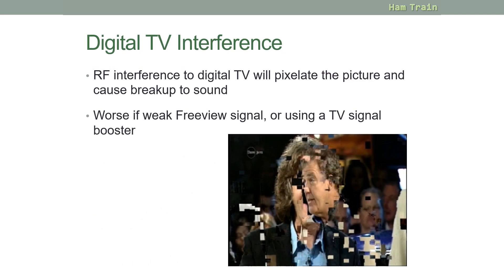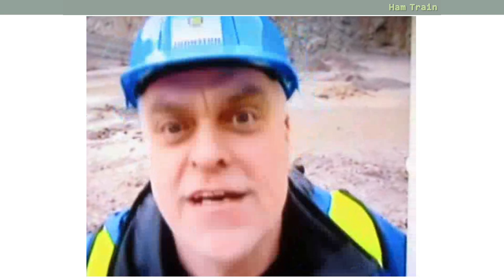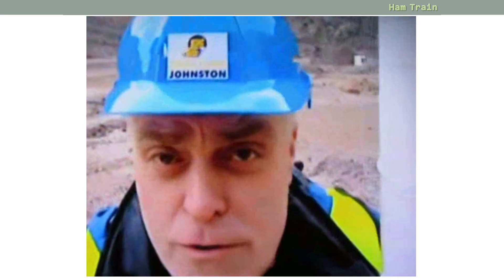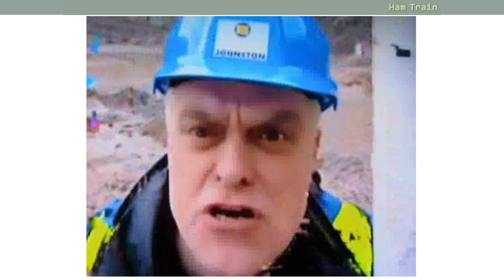A look now at TV interference. Amateur radio signals have the potential to interfere with TV, especially digital TV Freeview signals. Interference will result in the picture being pixelated and the sound breaking up, or both picture and sound stopping altogether. This can be particularly worse in areas where there is a weak Freeview signal or where someone is using a TV amplifier. Here is an example of pixelation being caused as a result of interference to digital TV.